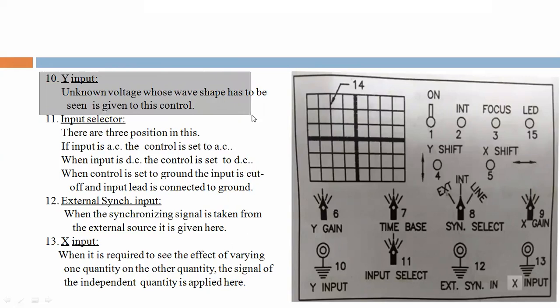Ten, Y input. Unknown voltage, whose wave shape has to be seen, is given to this control. Y input is here, yes, 10 number. Now, 11, input selector.